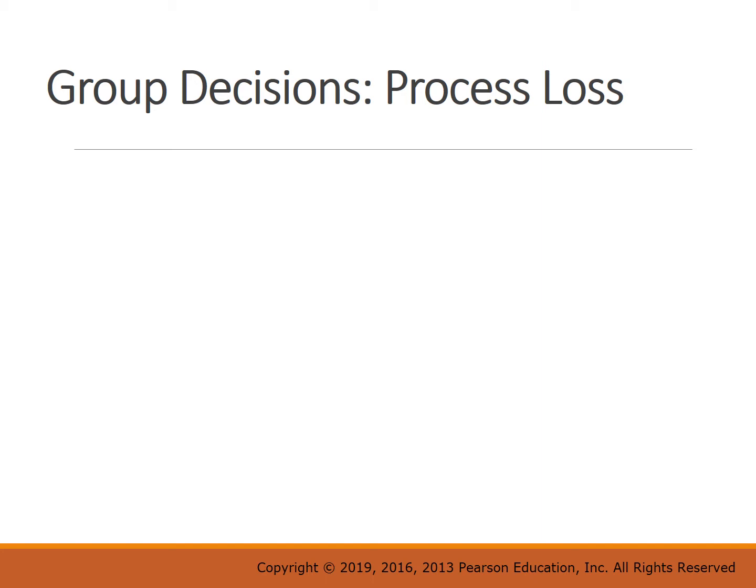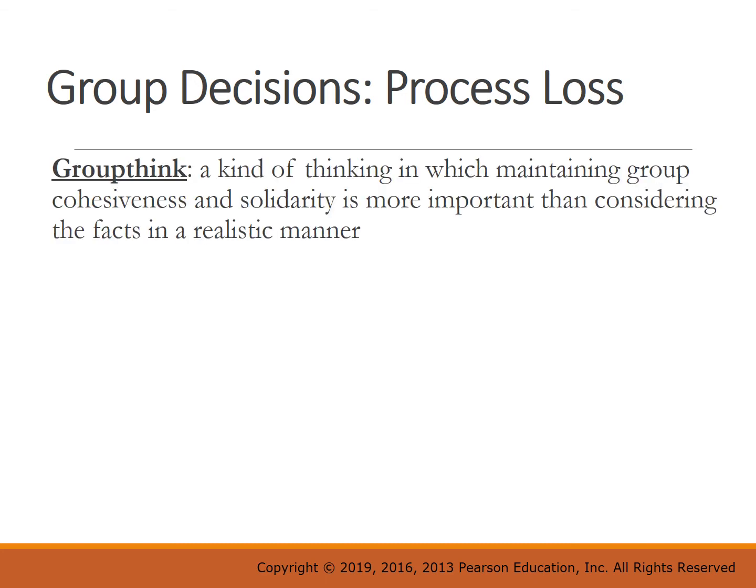Another way that process loss occurs is a phenomenon known as groupthink. Groupthink is a kind of thinking in which maintaining the cohesiveness and solidarity of the group is more important than considering the facts in a realistic manner.